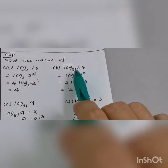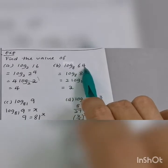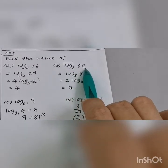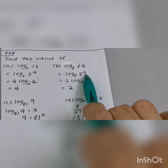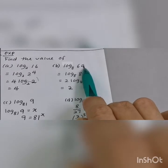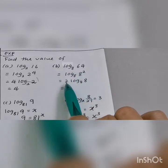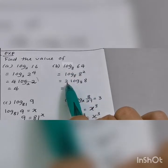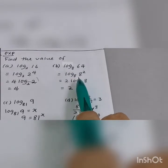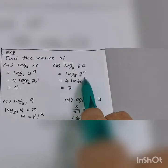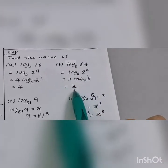How about this one: log base 8 of 64. 8 squared is 64. Move the power to in front — it becomes like this. When the base and the number are the same or equal, we cut it — becomes 1. So 1 times 2 equals 2.